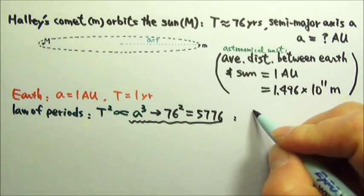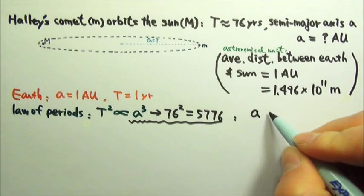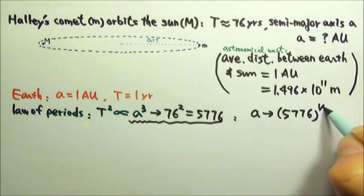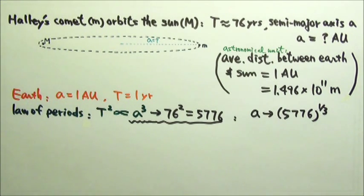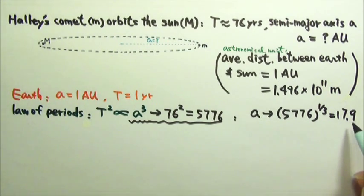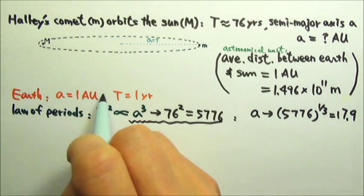So that means the semi-major axis changes by a factor of the cubic root of 5,776, which equals to 17.9. So the semi-major axis changes by that factor, and this is the old value.